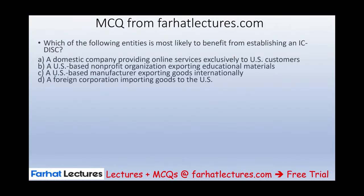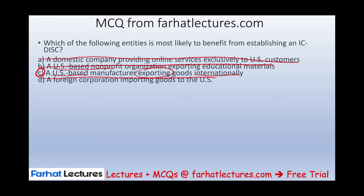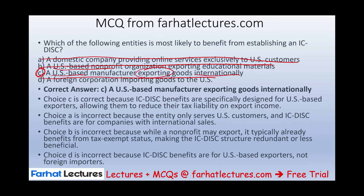Now a multiple choice question from FarhatLectures.com: Which of the following entities is most likely to benefit from establishing an IC-DISC? (A) A domestic company providing online services exclusively to U.S. customers — not export, so this is out. (B) A U.S.-based nonprofit exporting educational material — it's already nonprofit, so there's no tax incentive needed. (C) A U.S.-based manufacturer exporting goods internationally — yes, this is the correct answer, a U.S. company selling internationally. (D) A foreign corporation importing goods to the U.S. — not eligible. The benefit goes to U.S.-based manufacturers exporting internationally.